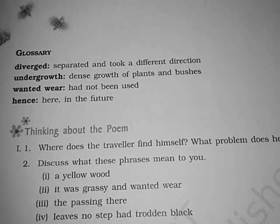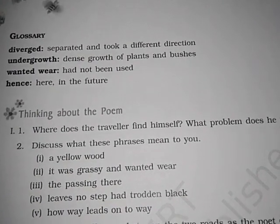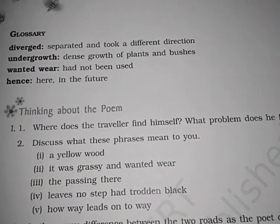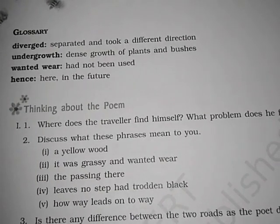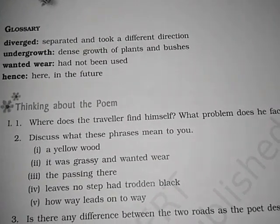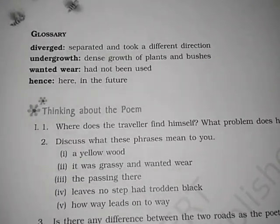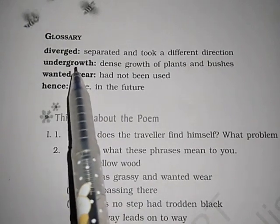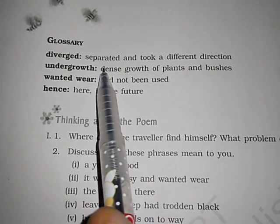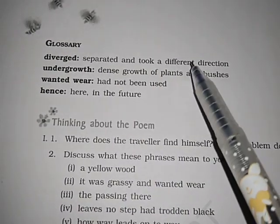Good morning students, welcome to the third part of the video, or the first poem of the Nantzendil students — 'The Road Not Taken.' So it is the glossary. The first word is 'diverge.' Diverge means separated and took a different direction.